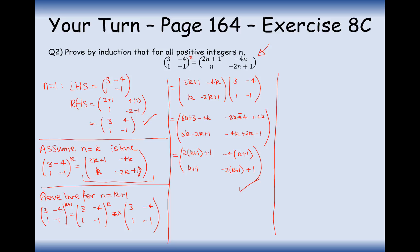The final step is the conclusion. As we have proven our theorem true for n=1, and assuming our theorem is true for n=k, we have proven our theorem true for n=k+1. Therefore by mathematical induction, (3, −4; 1, −1)^n can be simplified to (2n+1, −4n; n, −2n+1) for all positive integers n.